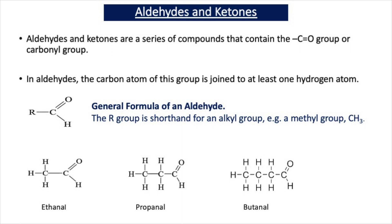Three examples of aldehydes are shown on this slide. We have ethanal, which has a CH3 group attached to a C double bond O H; propanal, which has a CH3 and a CH2 attached to a C double bond O H; and butanal, which has a CH3 attached to a CH2 attached to a CH2 attached to a C double bond O H. All three are aldehydes because they contain an alkyl group attached to a C double bond O and a H.